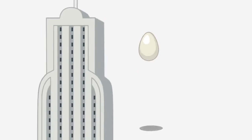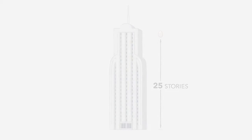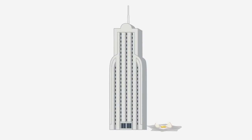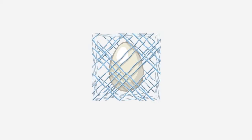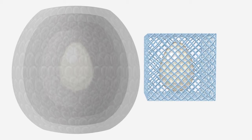Let's say you have the egg drop challenge that a lot of students have in school, where they need to drop an egg from 25 stories and protect it. You'd probably wrap it in many layers of bubble wrap and hope for the best. But what we can do is back-design the micro lattice to absorb the force that the egg feels, so instead of three feet of bubble wrap, you now have a much smaller package that your egg can sit in.